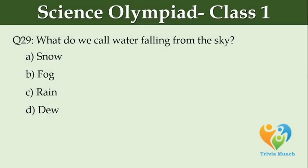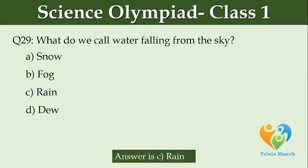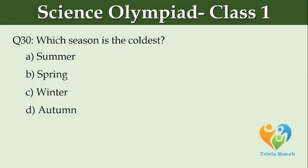What do we call water falling from the sky? Option A: Snow. Option B: Fall. Option C: Rain. Option D: Dew. Which season is the coldest? Option A: Summer. Option B: Spring. Option C: Winter. Option D: Autumn.